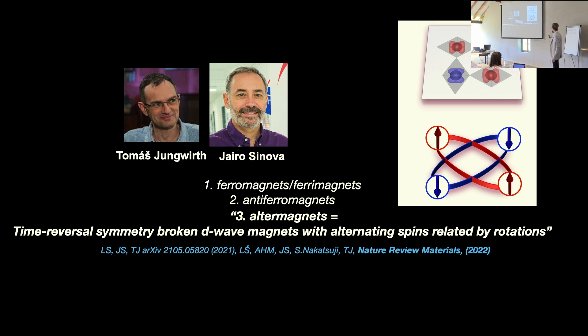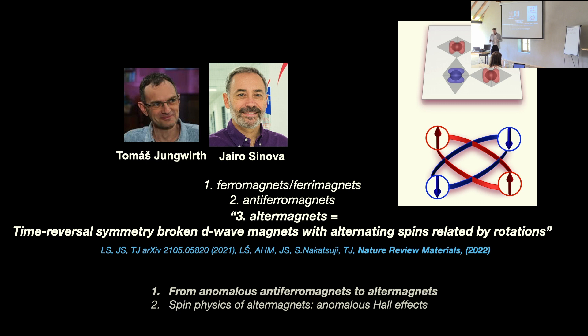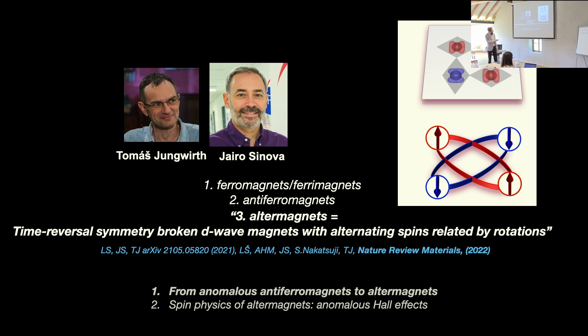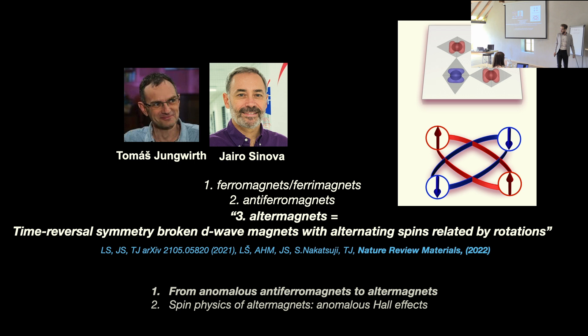I will talk mainly about these papers, and I divide the 20-minute talk into two parts. The first part will be about how we arrived at this notion, coming from discoveries of anomalous responses in materials we originally thought were exotic antiferromagnets, but which now turn out to be a separate third class. In the second part, I will show two interesting effects: non-relativistic spin currents in these materials, and relativistic anomalous Hall dissipationless currents.